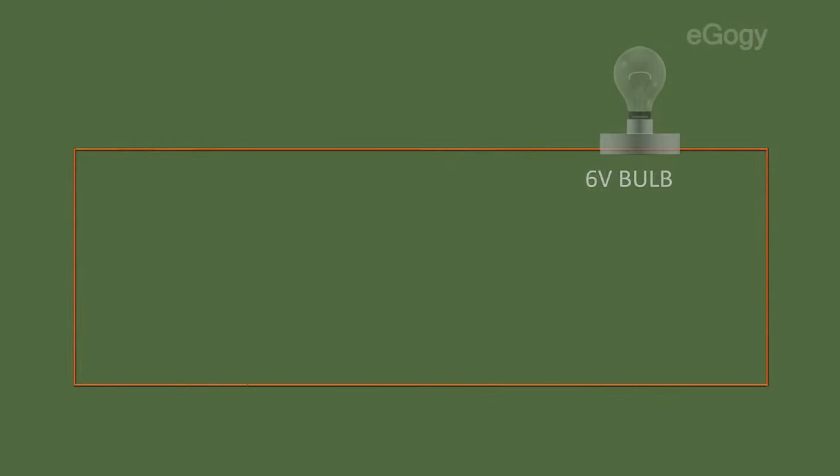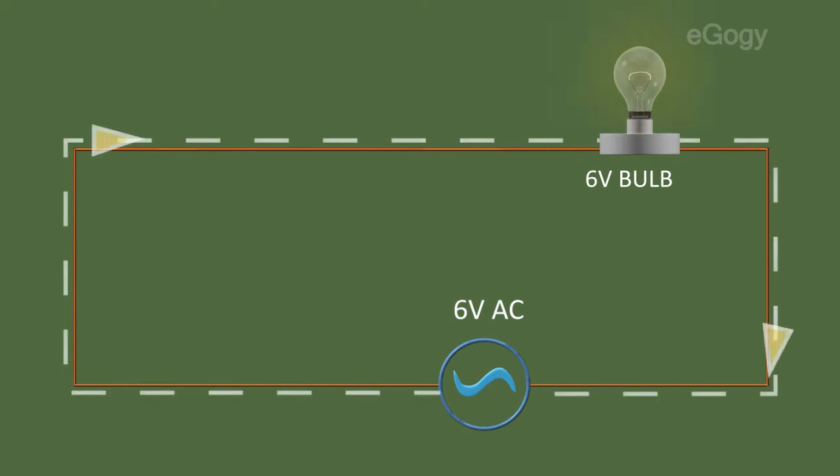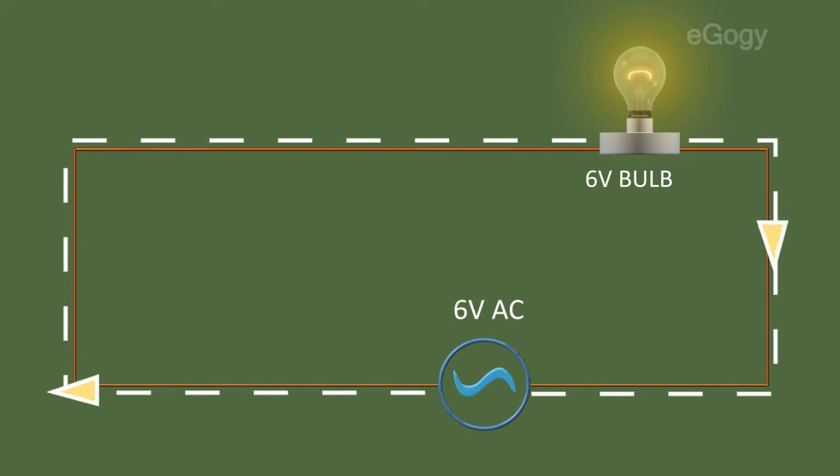Then connect a 6V bulb to an AC source by using this insulated wire. We can see that the bulb glows when electricity passes through it.